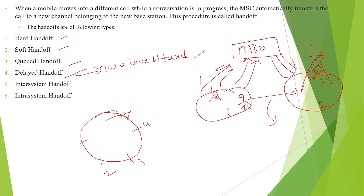Finally, the call is handed off from the present cell site to the next cell site without any interruption and without any break. This is called the handoff process in cellular mobile communications. Thank you.